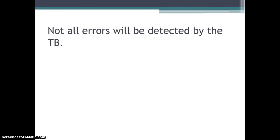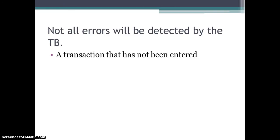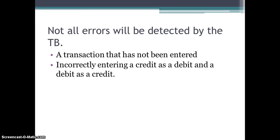However, the trial balance isn't a catch-all — it won't detect all errors. If a transaction that should have been entered is not entered at all, your trial balance will still balance but won't pick up that error. Similarly, if you've entered a credit as a debit and a debit as a credit — for example, debiting capital and crediting bank for a capital contribution — your trial balance will still balance, but the transaction is recorded the wrong way around.